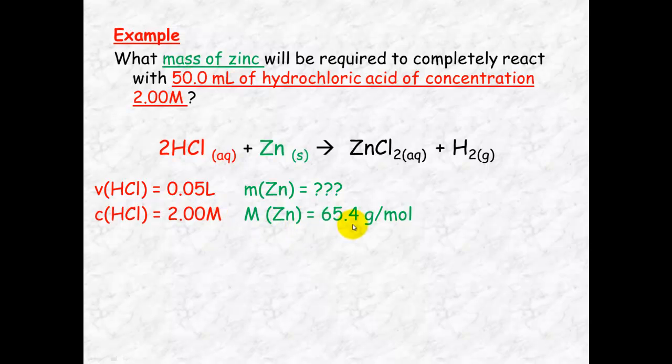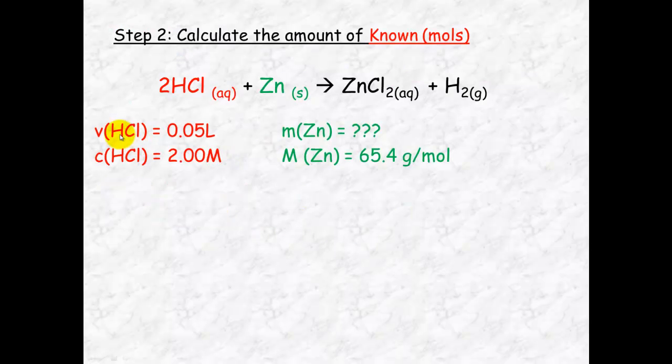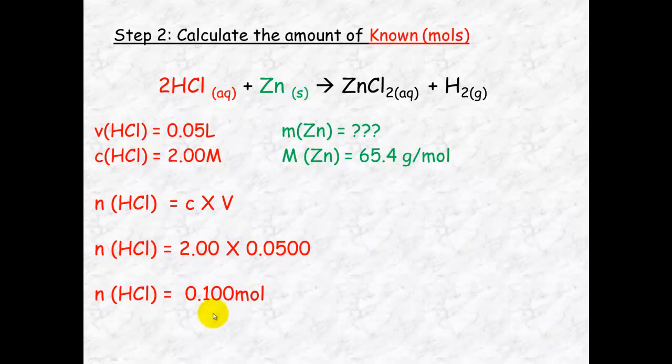And we know the molar mass of zinc. So knowing V and knowing C we're able to calculate the number of moles using n equals C times V. So n equals 2 times 0.05 which equals 0.1 mole.